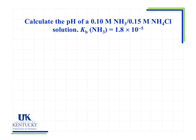We have a solution here, and in this solution we see that we have NH3 — nitrogen with three things connected — which is a base, and it's a weak base at that. If you were to add a proton, it would become NH4+, the cation of this salt, which would be its conjugate acid. So we have a solution that contains a weak base and its conjugate acid, which is what we call a buffer.